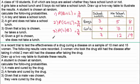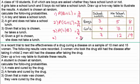Question four is very similar. Given that a girl is chosen, what's the probability she does not take a lunch? If a girl is chosen, that's out of 11 girls. The probability she does not take lunch is seven out of 11. The notation would be the probability of L' given G, meaning no lunch given that a girl was chosen.